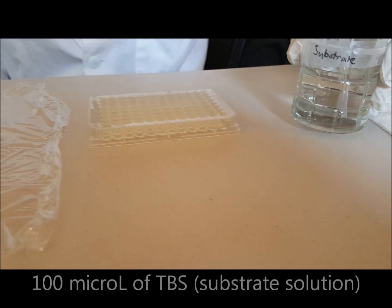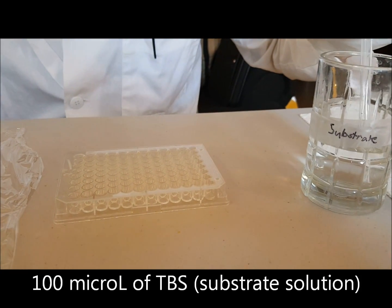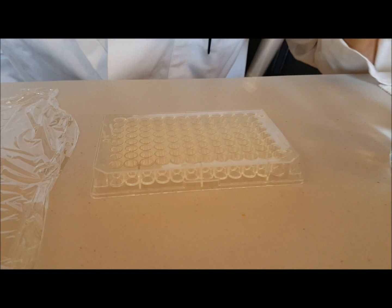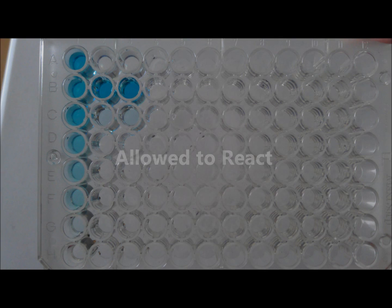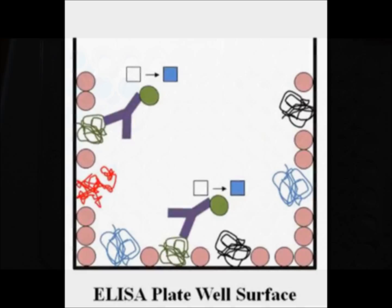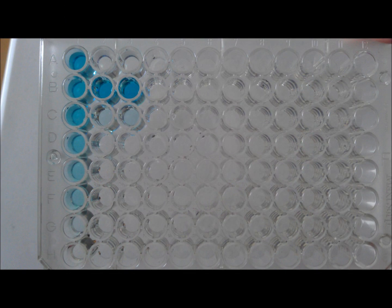Next, 100 microliters of a solution containing substrate to those attached enzymes mentioned earlier is added in. As the plate sits, a blue color is formed. This process causes the colorless substrate to complex with the enzyme which produces an overall blue color. The more blue color there is, the more the target antigen is present.